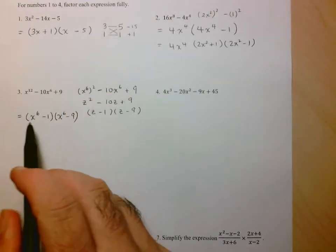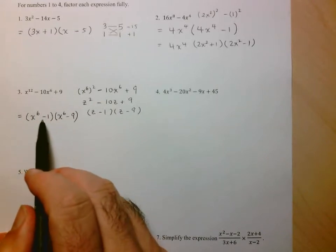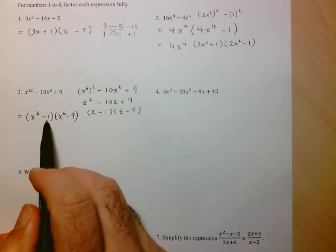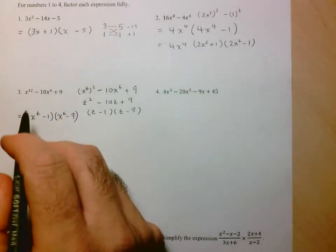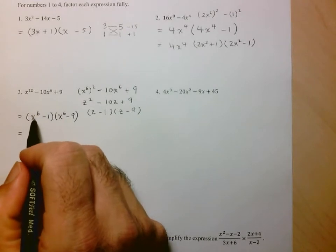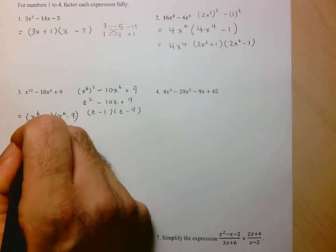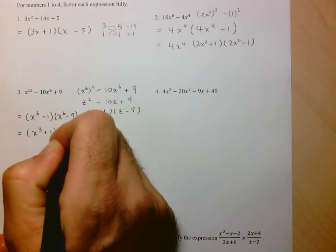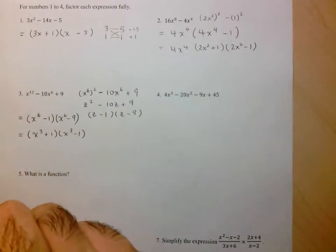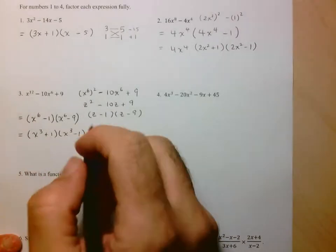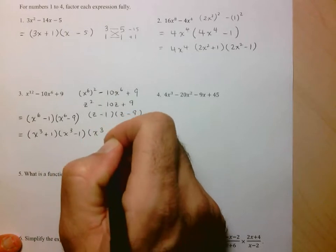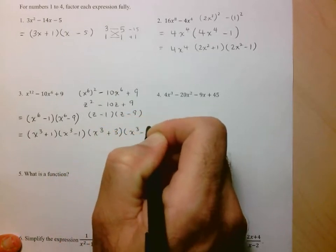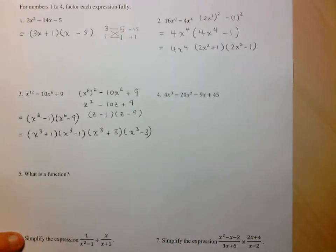So here, I look at these two, do a quick check, and realize that these are both differences of perfect squares. So I can keep going. So let's keep going here. x to the 6 is like x cubed squared. So the factorization of the first one will be x cubed plus 1 times x cubed minus 1. And then we look at the next one here. This will just be x cubed plus 3 times x cubed minus 3.